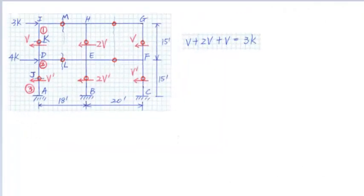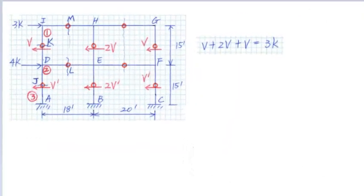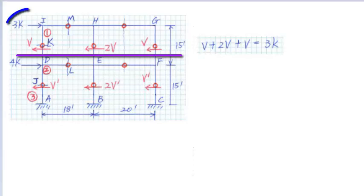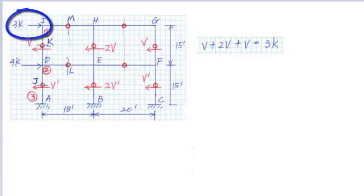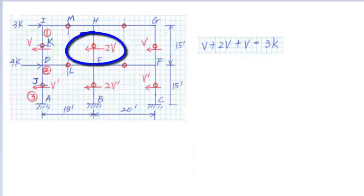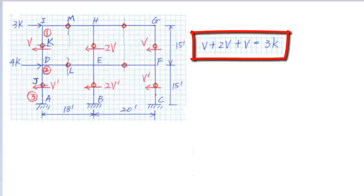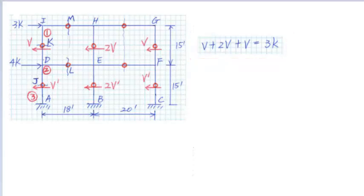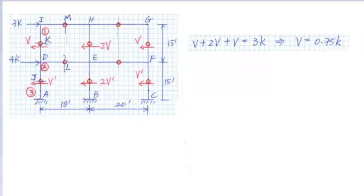According to the loading paths, the columns will take all the loads above them. At the second story level, the sum of the column lateral loads equals 3 kips. The lateral load in the exterior columns ID and GF is denoted as V, and the lateral load in the interior column HE is 2V. So we get V plus 2V plus V equals 3 kips, and solving gives V equals 0.75 kips.